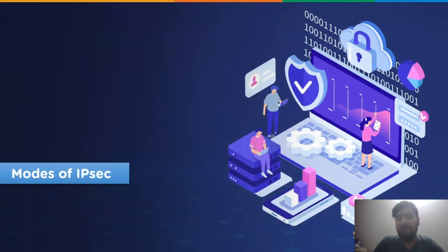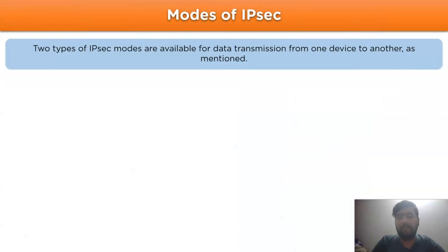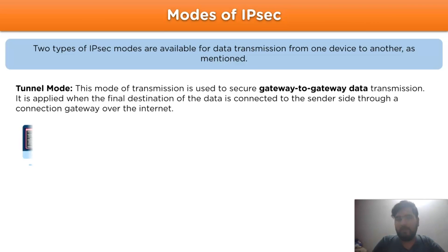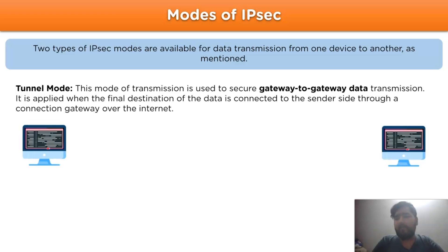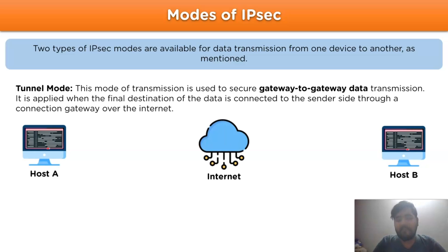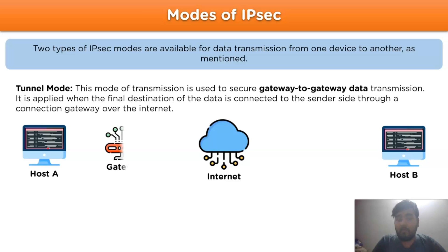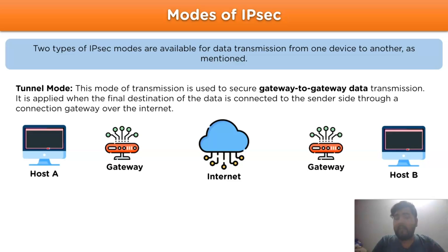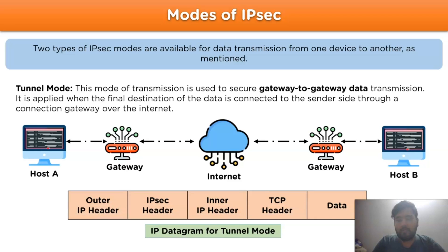Now let's move on to the modes of IPSec. There are two types of IPSec modes available for data transmission over the network channel. The first one is Tunnel mode. This mode is used to secure gateway-to-gateway data. It is applied when the final destination of the data is connected to a sender site through a connection gateway over the Internet. For example, we have two hosts — host A and host B. A message sent from host A to host B passes through a gateway at the host A point, and then through another gateway to host B. This is a basic format for gateway-to-gateway data transmission, and the given IP datagram format is used for Tunnel mode.